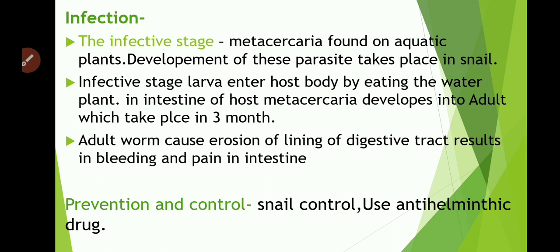Fasciolopsis buski causes an infection. The infective stage is the metacercaria larva found on aquatic plants. Development of this parasite takes place in a snail. The infective larva enters the host body by eating water plants such as water caltrops. In the intestine of the host, the metacercaria develops into an adult stage within 3 months. Adult worms cause erosion of the lining of the digestive tract, resulting in bleeding and pain in the intestine. Sometimes this also causes vomiting and diarrhea in the host.